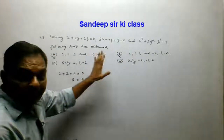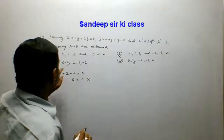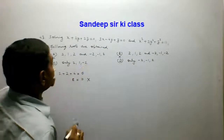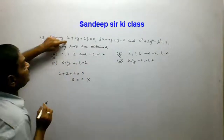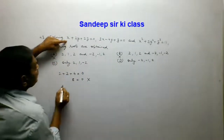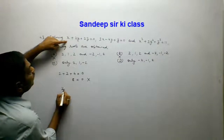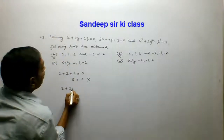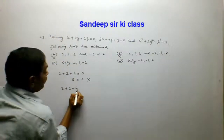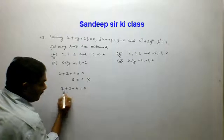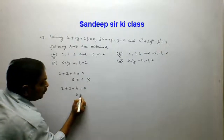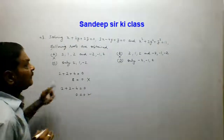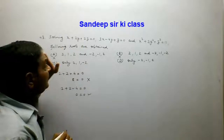Option C is (2, 1, -2). Putting these values into equation 1 gives 2 plus 2 minus 4, which equals 0. So 0 equals 0 — this is satisfying. The first equation is satisfied.